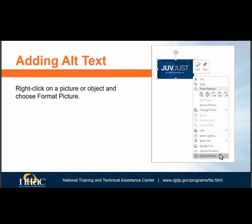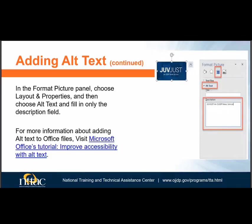Now let's go over how to add alt text to images in your PowerPoint file. It is easy to add alt text if you know where to find the alt text form. First, right-click on the image and choose Format Picture. If you have a newer version of PowerPoint, you can select Edit Alt Text instead. Select the Layout and Properties icon in the Format Picture pane. Expand the alt text dropdown and type the alt text in the description field. Don't use the title field unless the file will never become a PDF, because the title field does not convert to alt text when the file is converted to PDF.